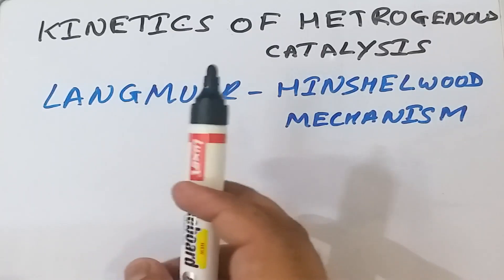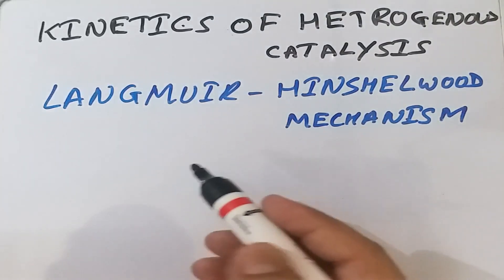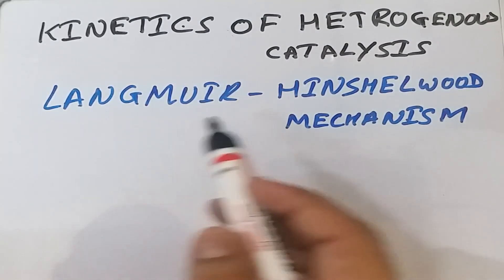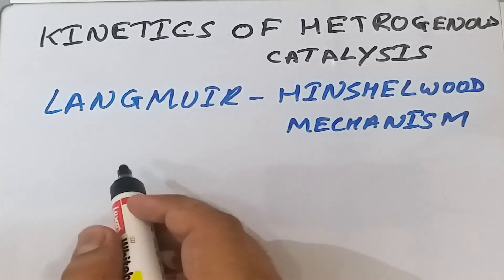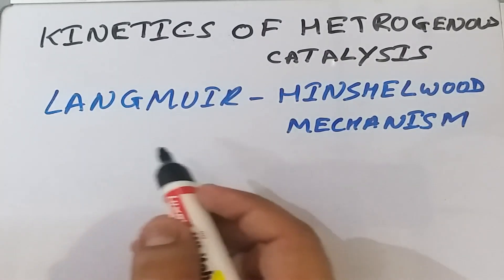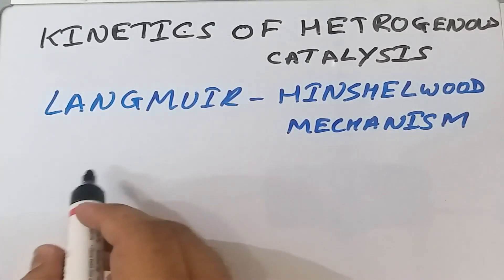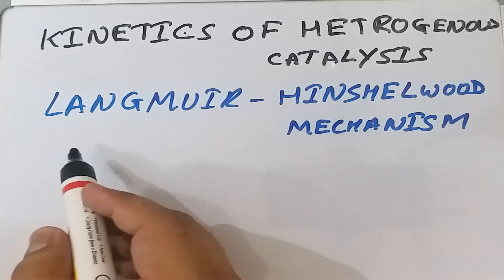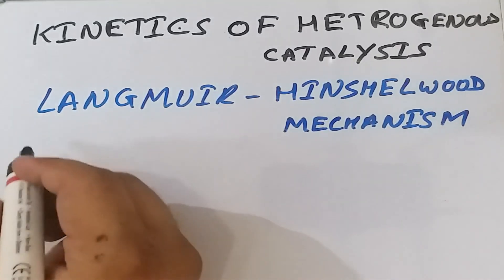Welcome. Today we are going to discuss kinetics of heterogeneous catalysis, also known as the Langmuir-Hinshelwood mechanism. This theory was proposed together by Langmuir and Hinshelwood. Several gaseous reactions of industrial importance take place in the gaseous state where solid-state catalysts are used. In heterogeneous catalysis, the catalyst and the reactants are in different phases. Langmuir and Hinshelwood suggested elementary steps for a gaseous reaction taking place on the surface of a catalyst.